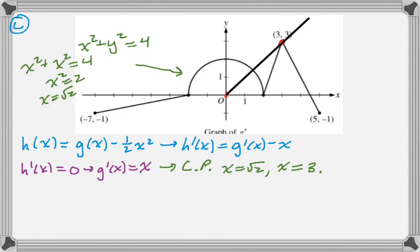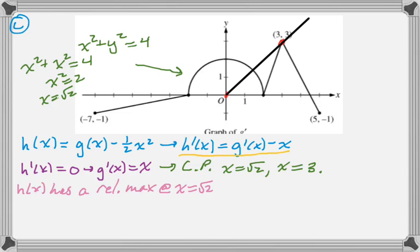The other intersection is obviously at x = 3, just by looking. Now we have to determine if these are relative max, min, or neither. h(x) has a relative maximum at x = √2. h prime is positive any time g prime is bigger than x. On that interval, g prime is definitely greater than the line y = x, so h prime is positive there, and then negative on the next interval because g prime is clearly below y = x. So we change from positive to negative — that is a relative maximum.